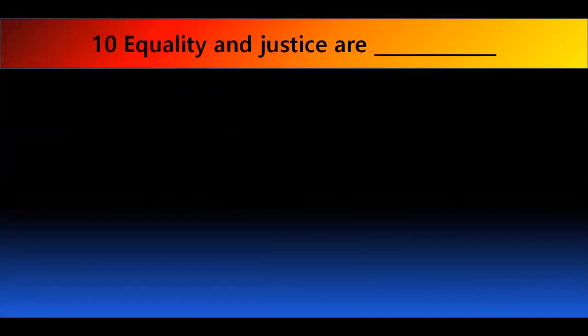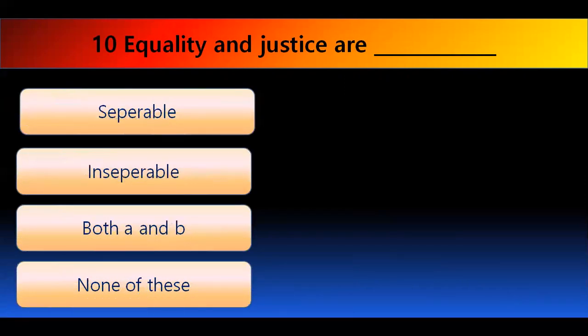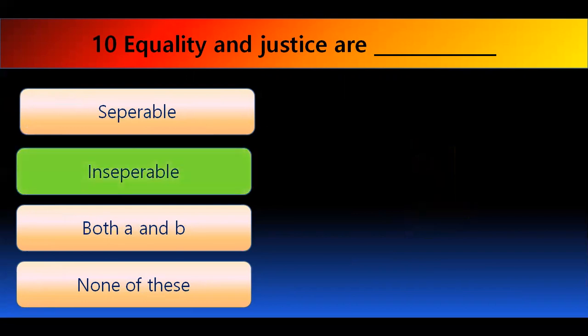Question number ten: Equality and justice are 'dash.' This is a key element of democratic government. The options are separable, inseparable, both A and B, or none of these. The right answer is inseparable — we cannot separate equality and justice; they are the same thing. I hope you enjoyed. Keep reading, keep practicing. Take care and bye-bye.